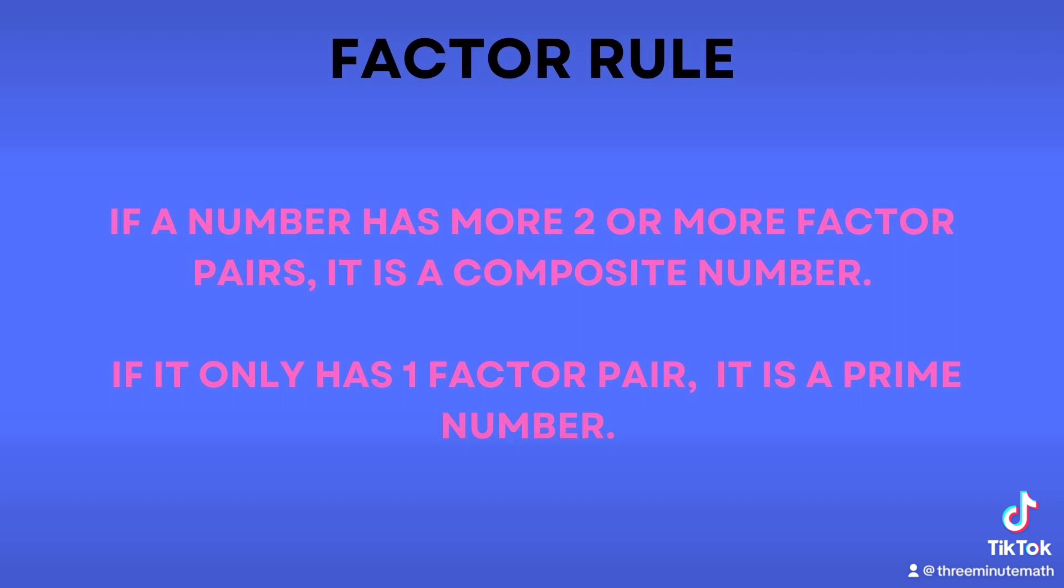Now, let's use factors to determine prime and composite. If a number has two or more factor pairs, it's composite. If it has only one factor pair, it's prime.